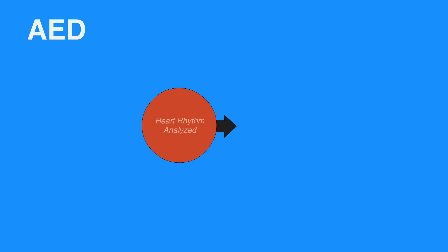Once the rhythm is analyzed, the device will direct you to shock the individual if a shock is indicated. A shock depolarizes all heart muscle cells at once, attempting to organize its electrical activity. In other words, the shock is intended to reset the heart's abnormal electrical activity into a normal rhythm.